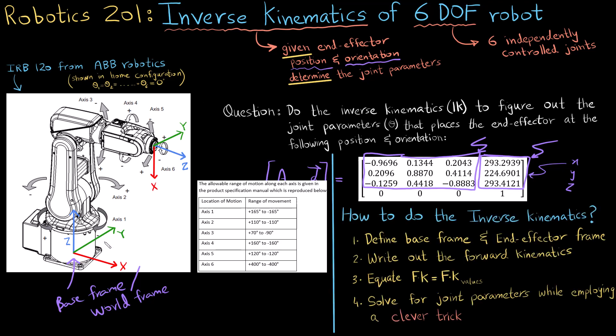So how do we go about inverse kinematics? There are four basic steps that we need to do. The first being we need to define the base frame and the end effector frame which in this case I have already defined. Secondly we need to write out the forward kinematics.